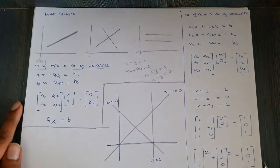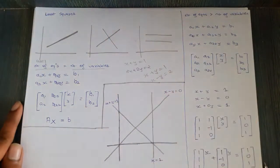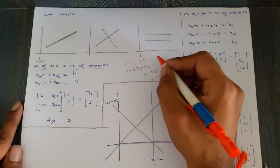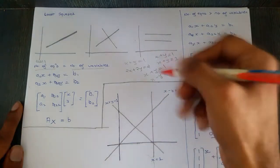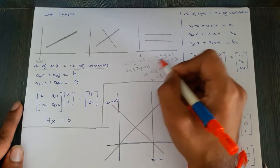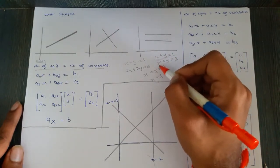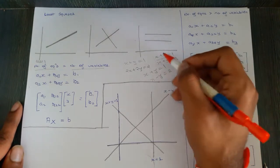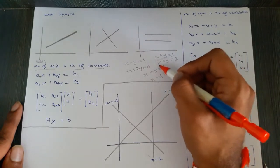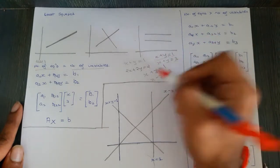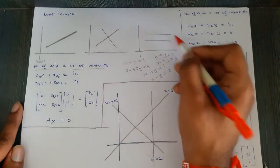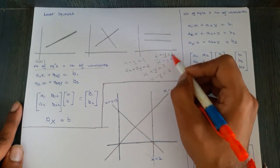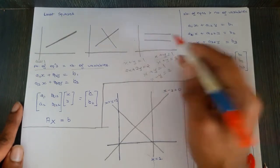The third case is parallel lines — for example, x + y = 1 and x + y = 3. These contradict each other: if x + y equals 1, how can x + y also equal 3? So by common sense these two parallel lines will never intersect, giving no solution.